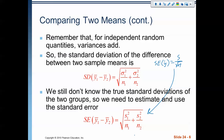In order to look at the standard deviation of the difference between two sample means, this is the formula we get. However, just like before, we don't know the true population standard deviation, so we estimate it with the sample. When we estimate it with the sample, we add a little bit of variation, so we need to account for that variation by using the t model instead of the z model.